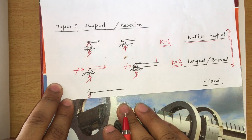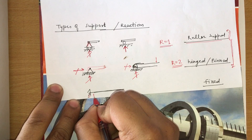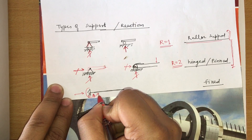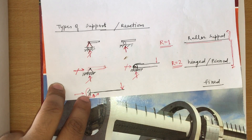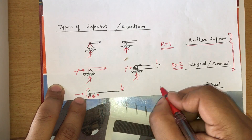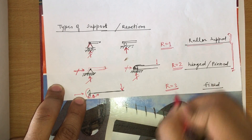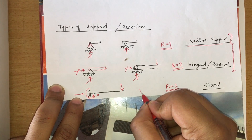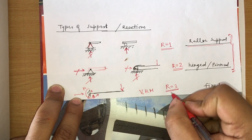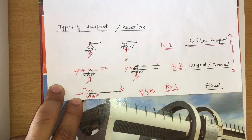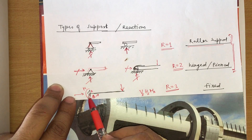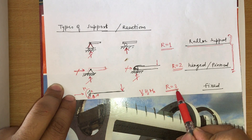After hinge, there is the fixed support. A fixed support can give three reactions: one vertical, one horizontal, and one moment — it can also transfer the moment. If a force is applied, the reaction comes, and because of the force and the distance, a moment also develops. Total reaction R equals 3. The reactions are vertical reaction V, horizontal reaction H, and moment M. In a cantilever or fixed support, three reaction components are present.